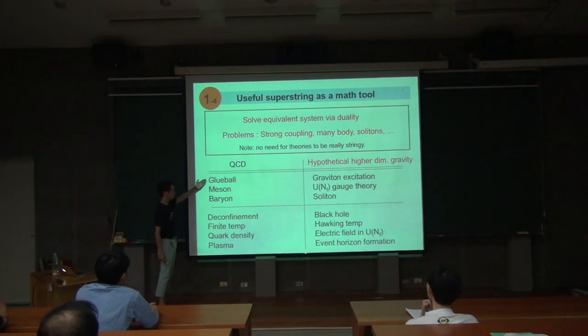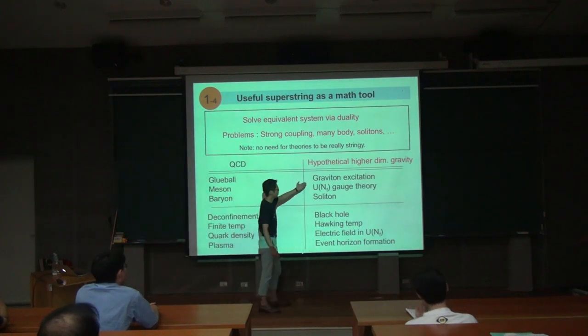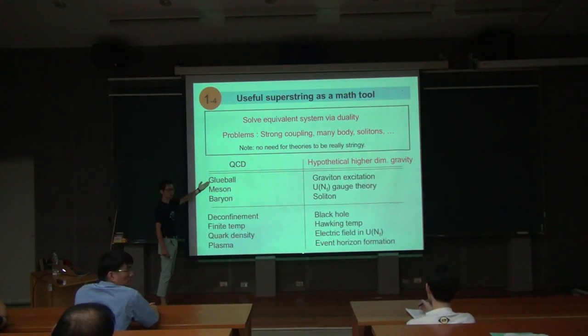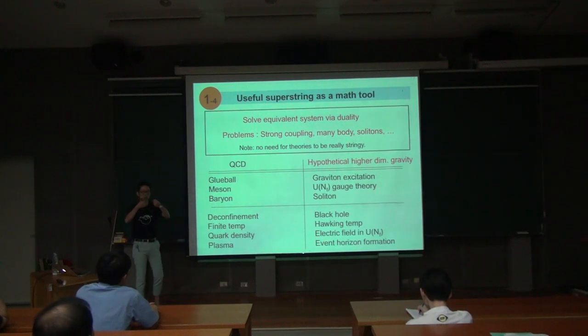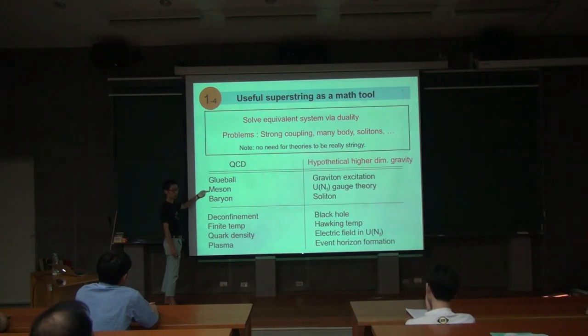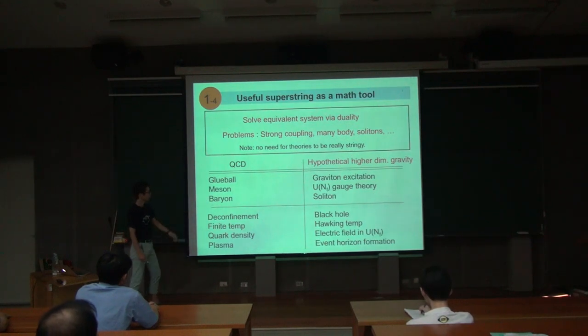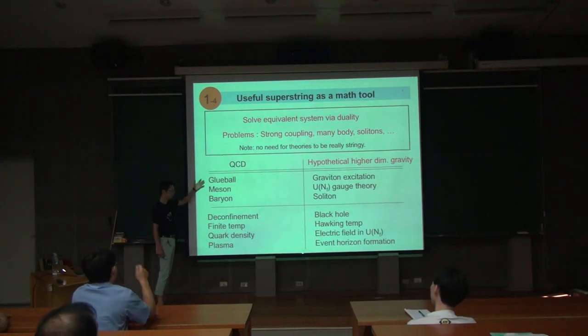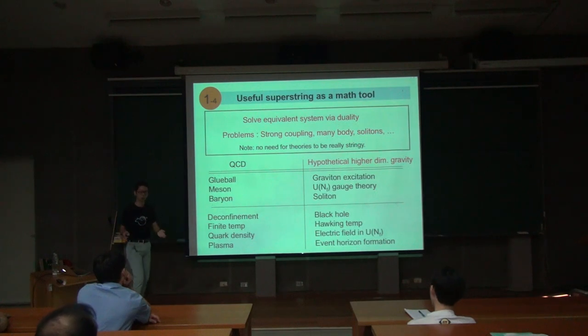For example, here we have a QCD phenomena which we want to analyze. And on your right, there is a dual theory which is weakly coupled. In QCD, there are excitations of gluons. This glueball is a bound state of gluons that's difficult to analyze. At any time, bound state is very difficult to analyze in quantum theory. And here, mesons, these are quark-antiquark states, and baryons, these are protons and neutrons, those are three-quark bound states. And these are fundamental ingredients for QCD, and we want to know what is the mass for these, what are the interactions between these to implement the basis for the nuclear physics.